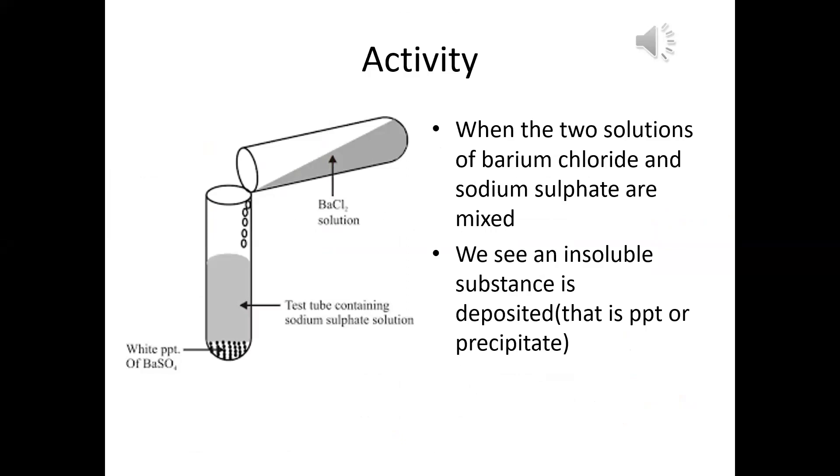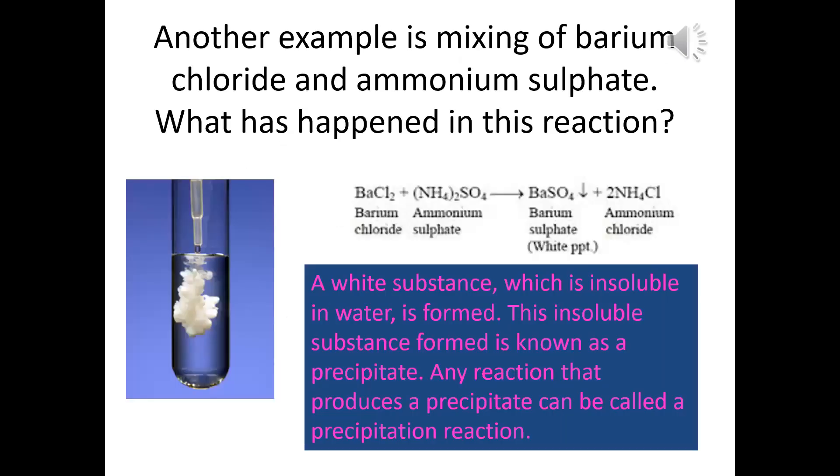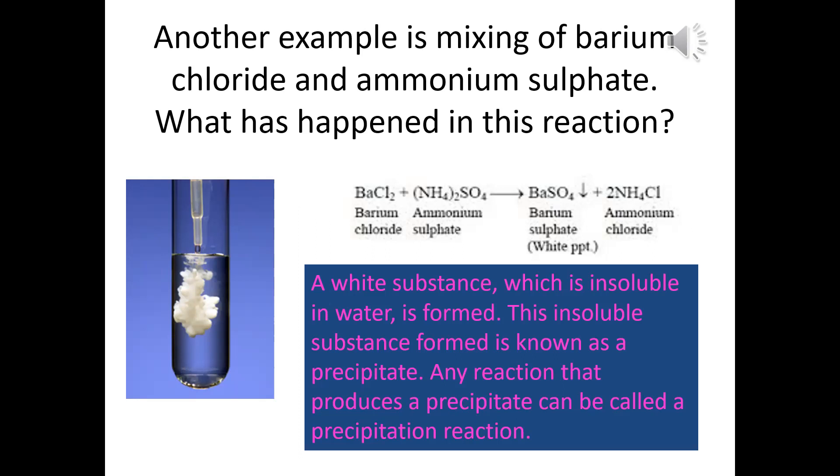To understand the last type of chemical reaction, we can see in this slide, there are two solutions which are mixed together. One is barium chloride and the other is sodium sulfate. As soon as they mix together, we see a white PPT settled at the bottom of the test tube. This insoluble substance formed again because a new substance is formed, it is a chemical reaction. Another example is given here, barium chloride, ammonium sulfate. Again, as soon as we mix them, we again get a white PPT. This white PPT, insoluble substance, we call it as precipitate.